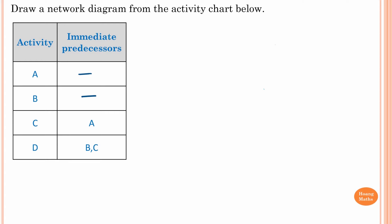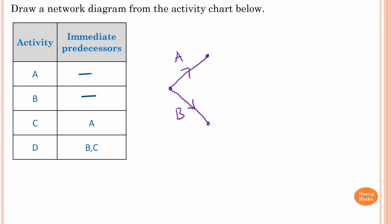We know that A and B have no immediate predecessors, so we can draw the network. This is activity A and this is activity B. For activity C, the immediate predecessor is A. Take note that B and C have the same vertex because B and C are immediate predecessors of D.